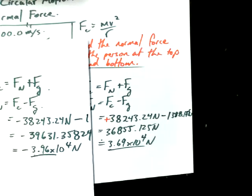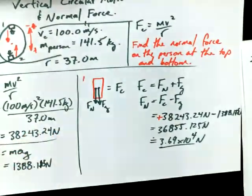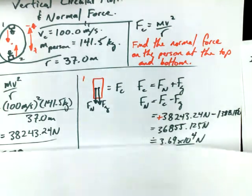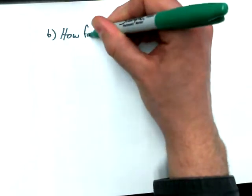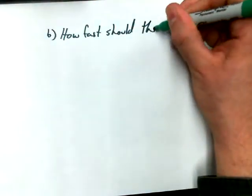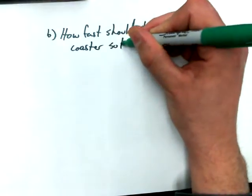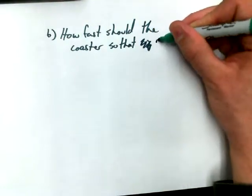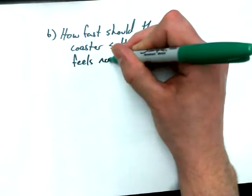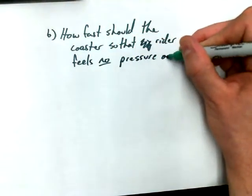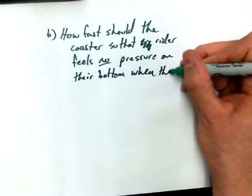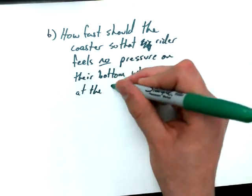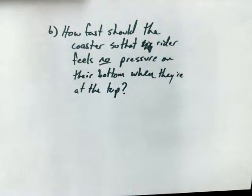So I want to actually talk about what that might mean in terms of this roller coaster ride. So I want that to be a part B for us here, okay? So we're actually going to keep on with this roller coaster ride. I want to finish this off with part B. So part A was to find the normal forces at the top and the bottom. Part B, how fast should the coaster go so that the rider feels no pressure on their bottom? When they're at the top. When they're at the top. That's the question.